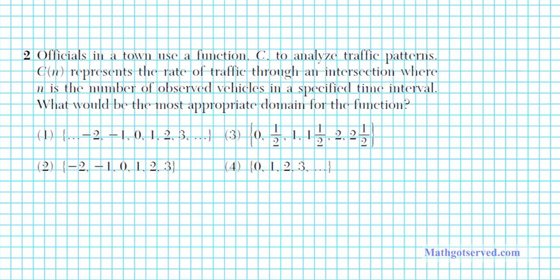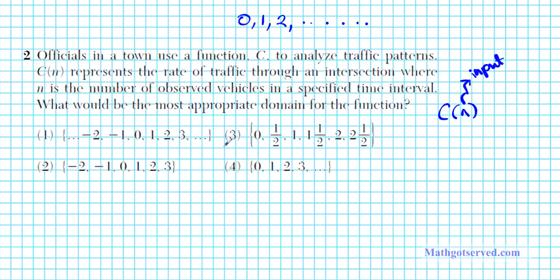In this situation, our domain is also known as the independent variable. So if you have c sub n, this is the function, and n right here is the input. Any acceptable domain values would get plugged in here. So our domain is basically the set of number of observed vehicles. If you think about number of vehicles and you're making an observation, you can see no vehicles at all, one vehicle, two vehicles, or a lot of vehicles.